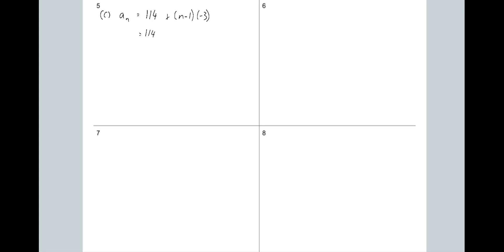You could simplify that, but you don't always have to — sometimes it's a waste of time. I'll expand it: that's minus 3n plus 3, which equals 117 minus 3n. And there's that 117 coming up again. But it's not A sub 1; it's not a sub 1 — just 117 minus 3n.